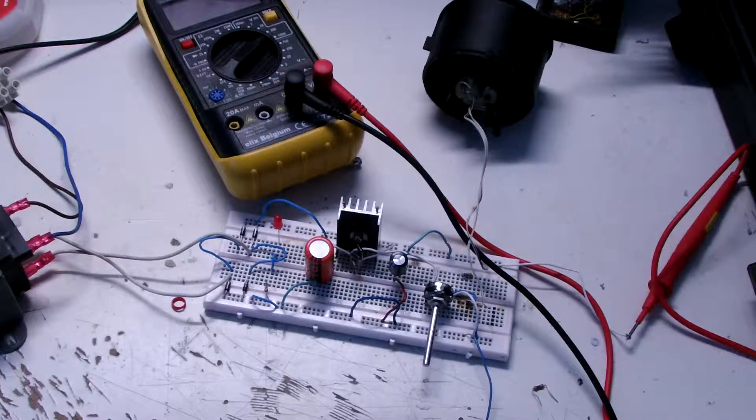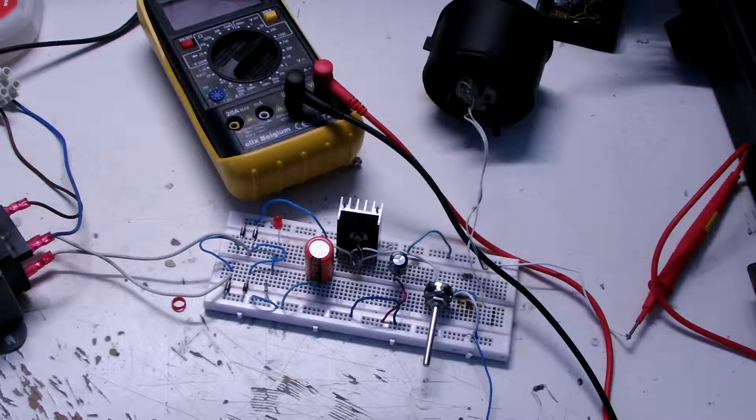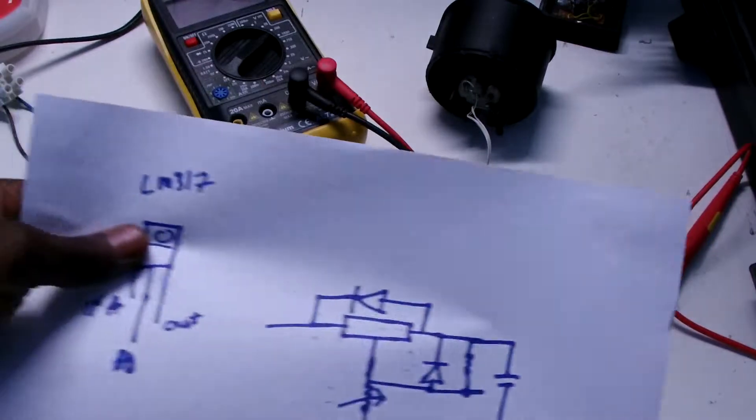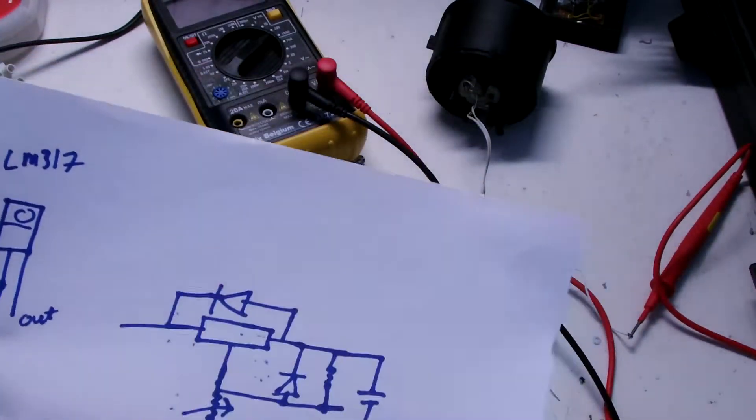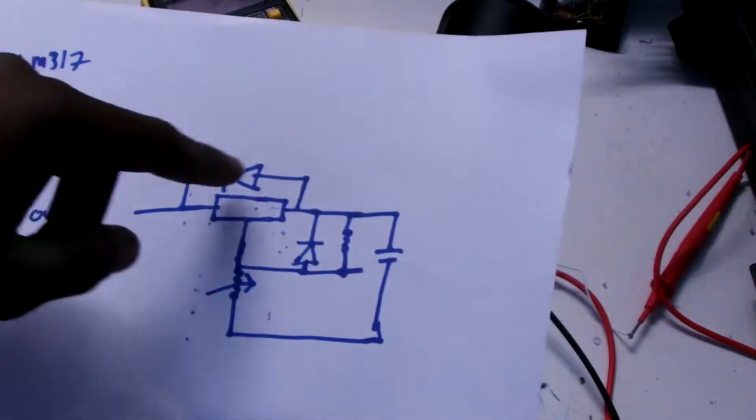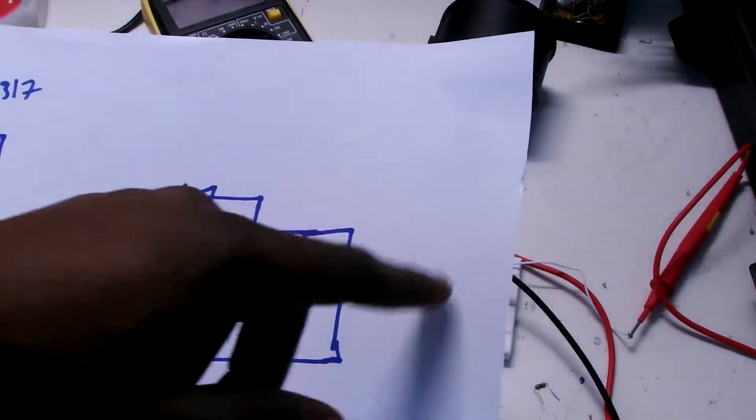I'm working on a bench power supply using an LM317. This is the setup I've put together with two diodes here for protection against the short circuit at the output.